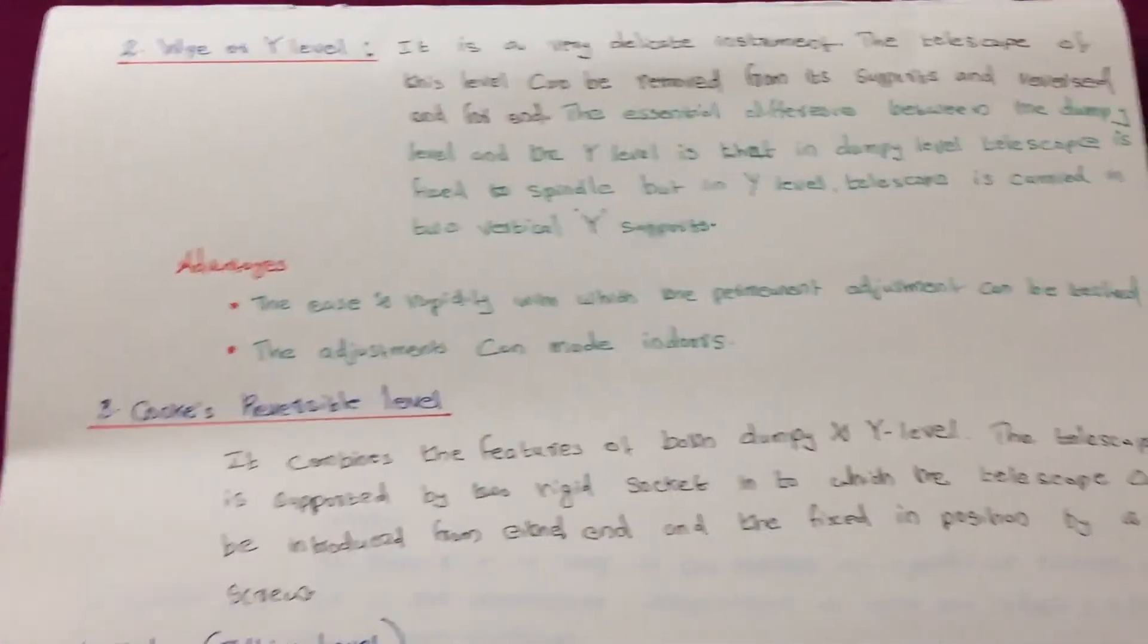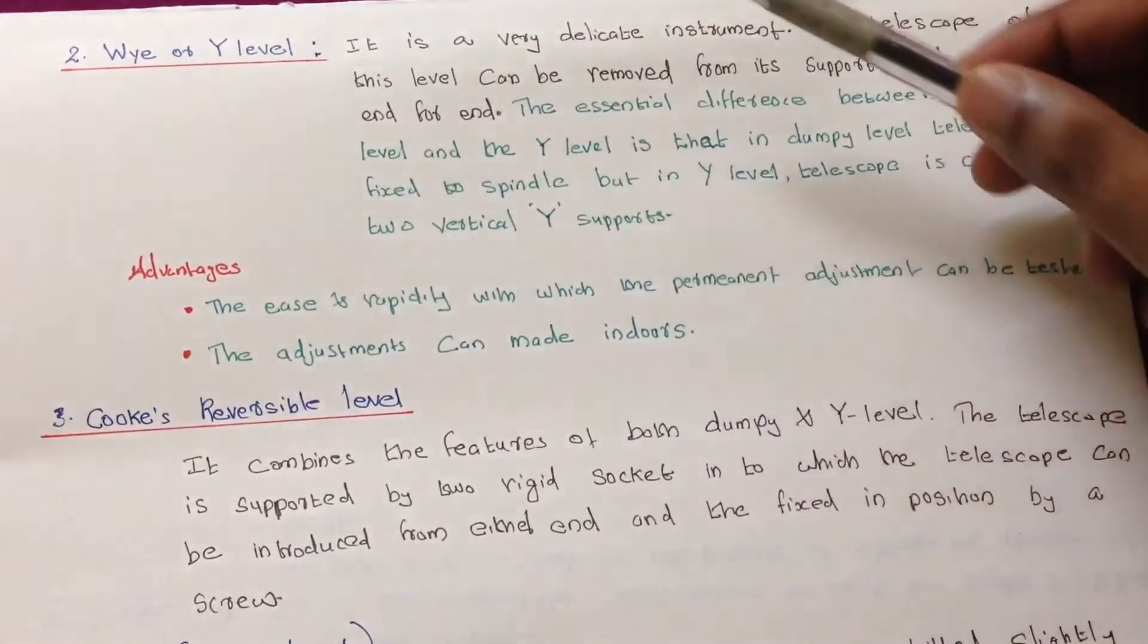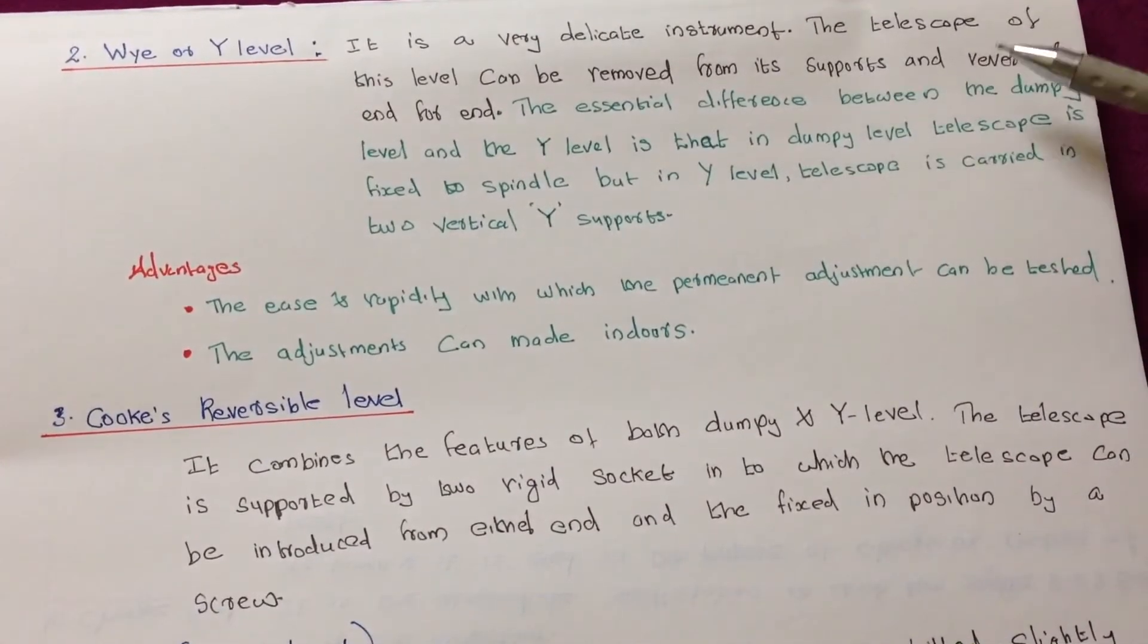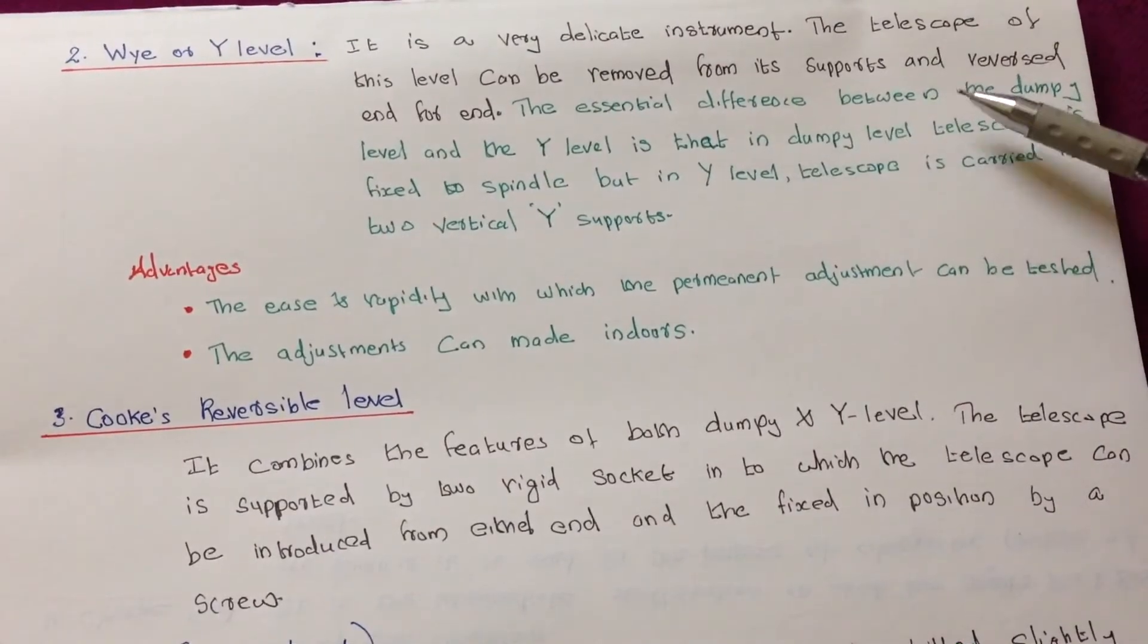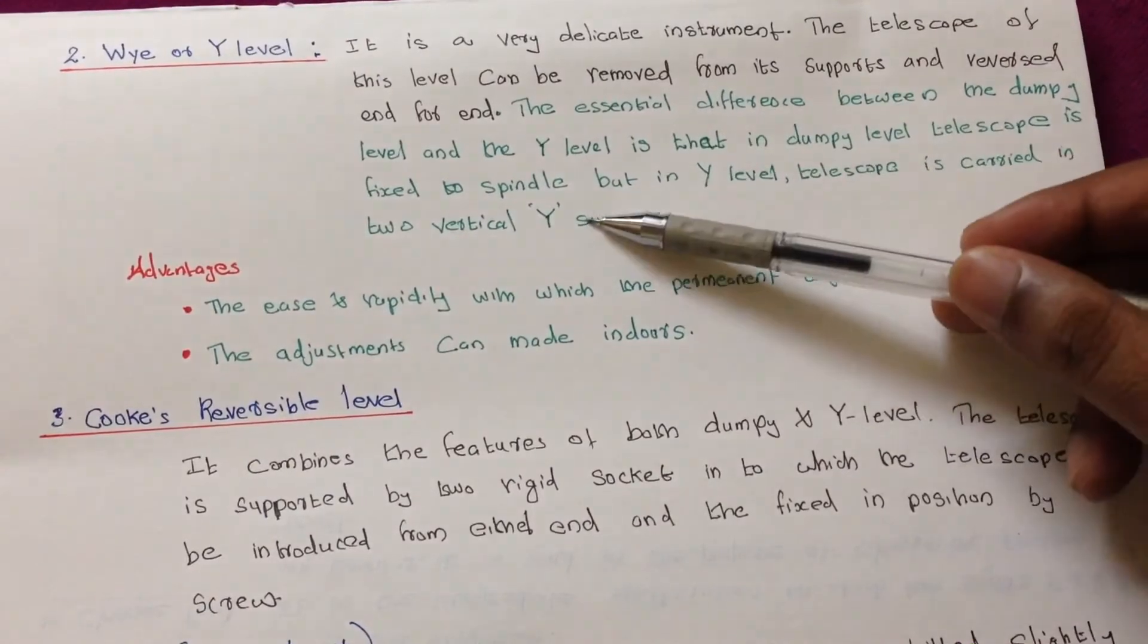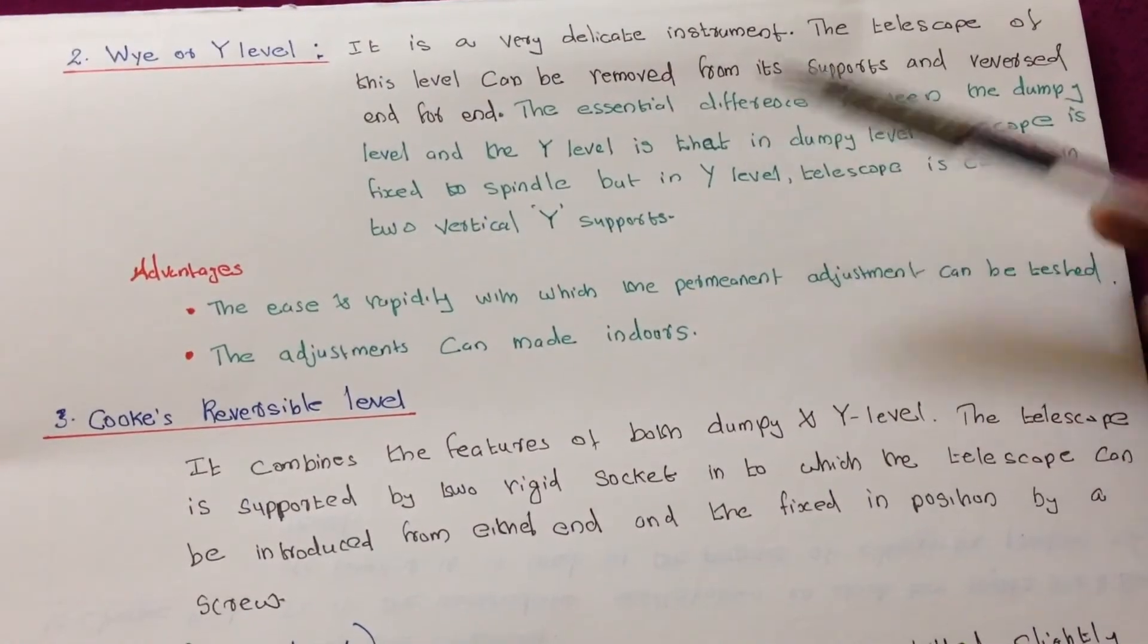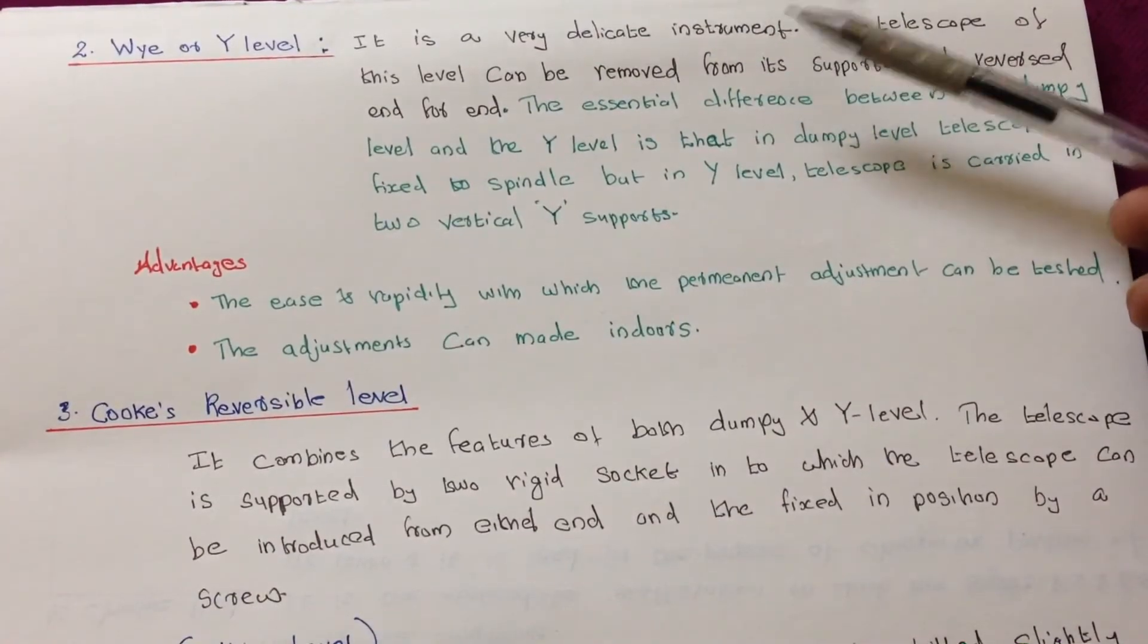That is Y or wye level. It is a very delicate instrument. The telescope of this level can be removed from its supports and reversed end for end. The essential difference between the dumpy level and the Y level is that in dumpy level telescope is fixed to spindle, but in Y level telescope is carried in two vertical Y supports. So Y level is a very delicate instrument, it's very delicate.